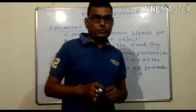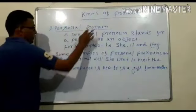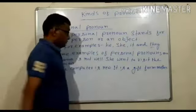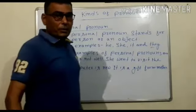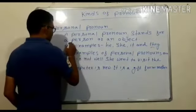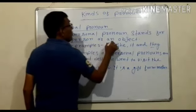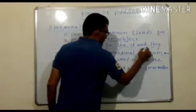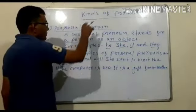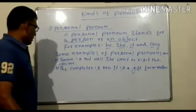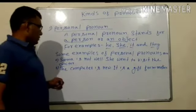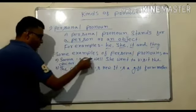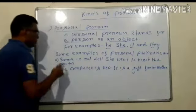The first kind of pronoun is personal pronoun. A personal pronoun stands for a person or an object. That means, personal pronoun is used for a person or an object. For example: Sima is not well. She went to visit the doctor.